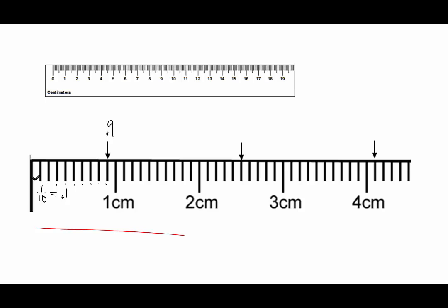For centimeters we use decimals. So this is two and five-tenths. So this is four and one-tenth. Notice that your decimal point is your 'and'.